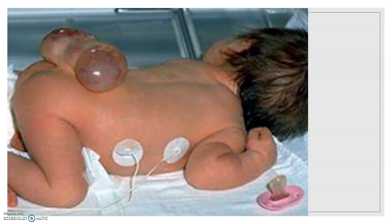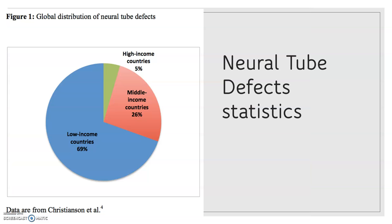Neural tube defects can cause serious problems for babies, including death. In this picture you can see one of the most common types of neural tube defects called spina bifida, which happens when a neural tube fails to close on the lower part of the spinal cord. In the United States, neural tube defects occur in about 3,000 births per year.